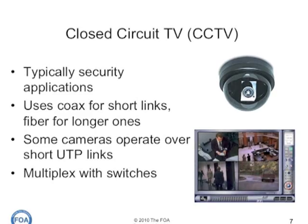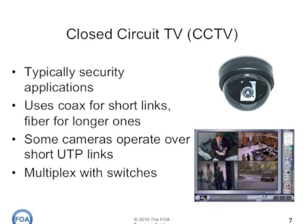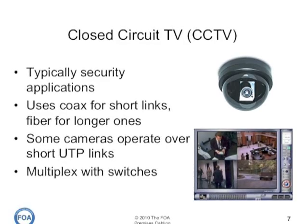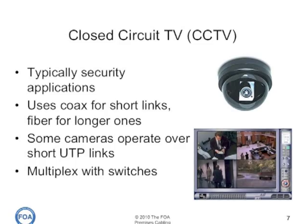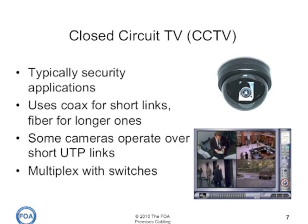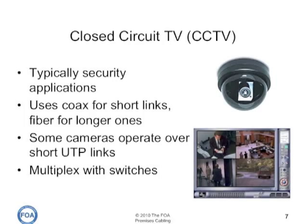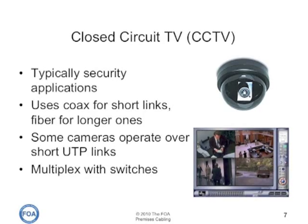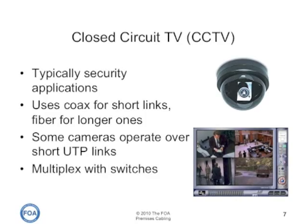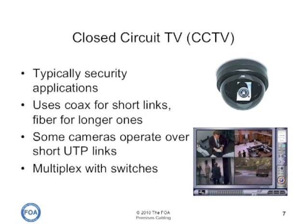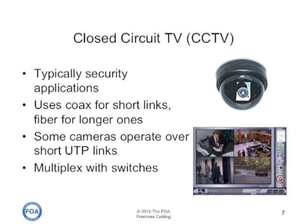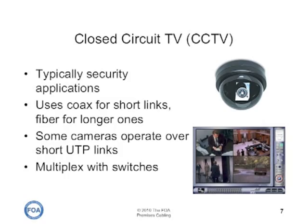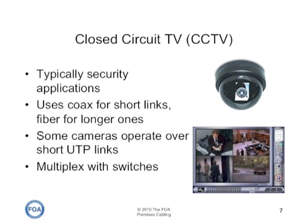Closed-circuit TV is typically used for security applications. It traditionally used coaxial cable for short lengths, and now many systems use fiber for longer ones, like in airports or large public buildings. Some cameras are also designed to operate over short unshielded twisted pair lengths within the 100-meter limitation of structured cabling. Multiple cameras can be multiplexed by switches and used for monitoring many places around a public building.